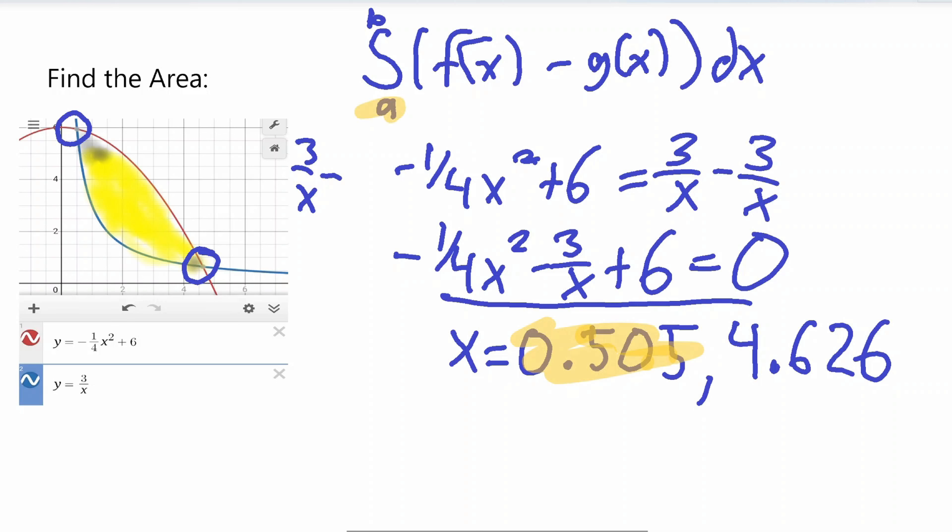So this 0.505 will be our a value, and our b value will be the 4.626. Let's rewrite the integral, so from a to b. So it's from 0.505 to 4.626.